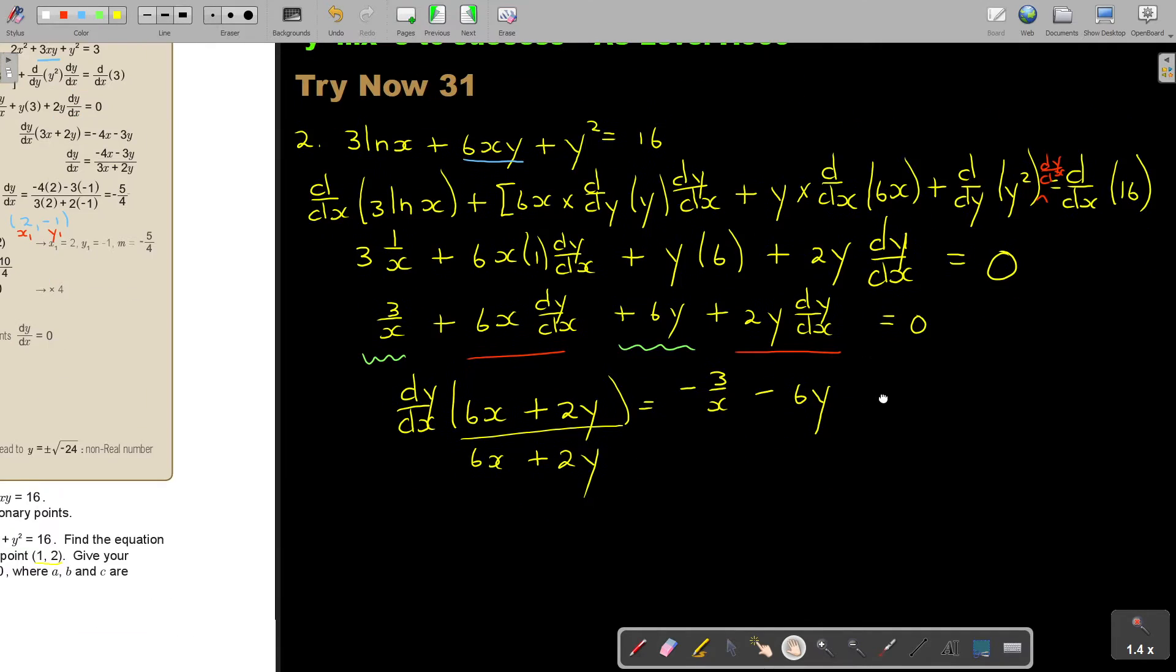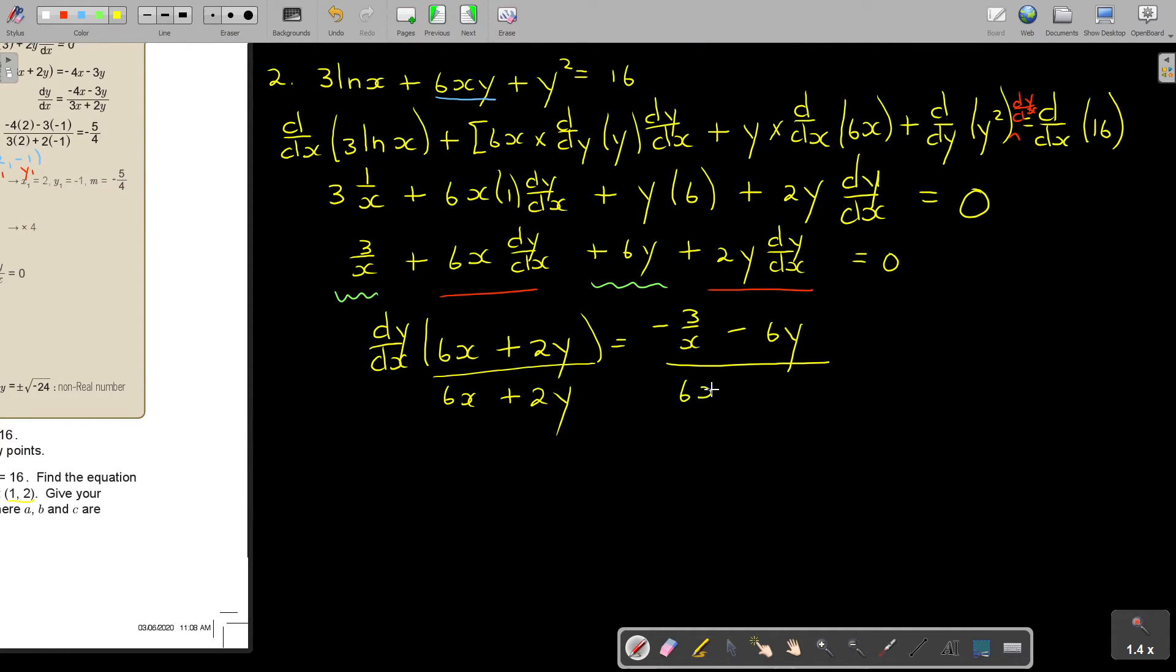To get it more simple, I'm going to make the denominators the same. So I multiply by x. So dy/dx equals negative 3 minus 6xy over x, multiply by 1 over (6x plus 2y). So this is negative 3 minus 6xy, and if you multiply, it's 6x squared plus 2xy.